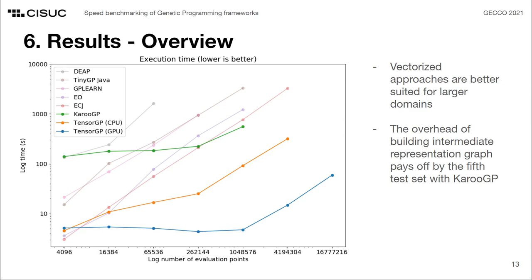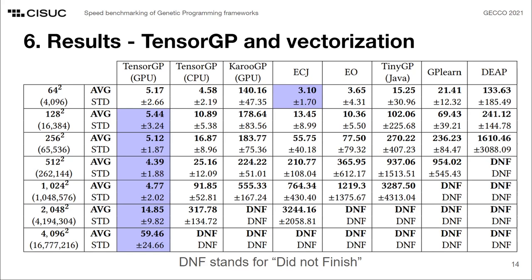In the next table, we can see the same results with both average and standard deviation values for the executed experimental runs. As highlighted in the table, we can verify that both TensorGP approaches running on CPU and GPU are faster from the second test set onwards. This is partially due to the fact that TensorGP runs in the eager execution mode of TensorFlow, that executes operations immediately rather than compiling them as a graph like KaroGP. This is shown to be beneficial in the context of the evolutionary process.